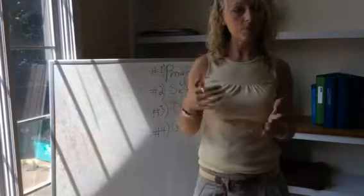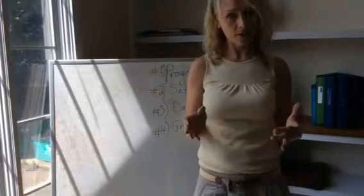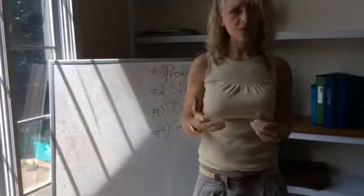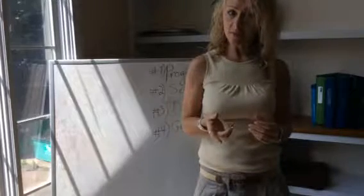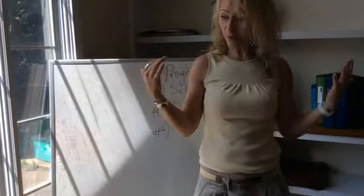So discrete trial one: teacher places one red and one blue card on the table in front of Jane. The teacher then says point to red. Jane responds by pointing to the red card. The teacher would say that's right, great job.